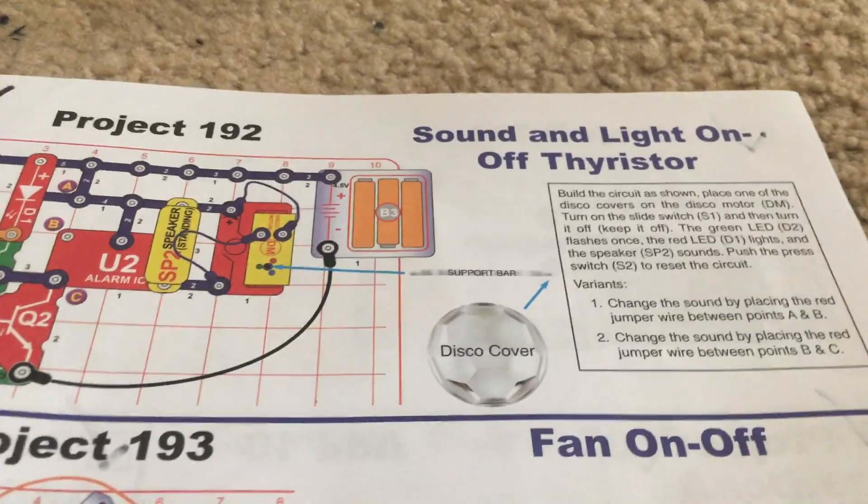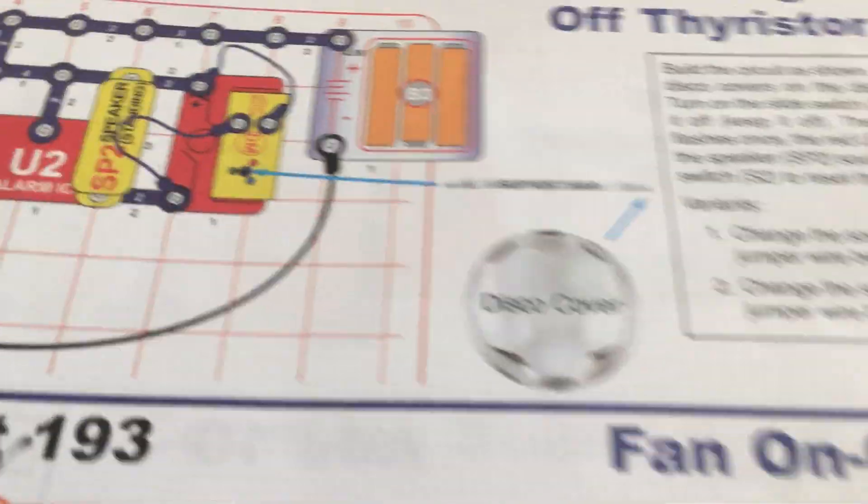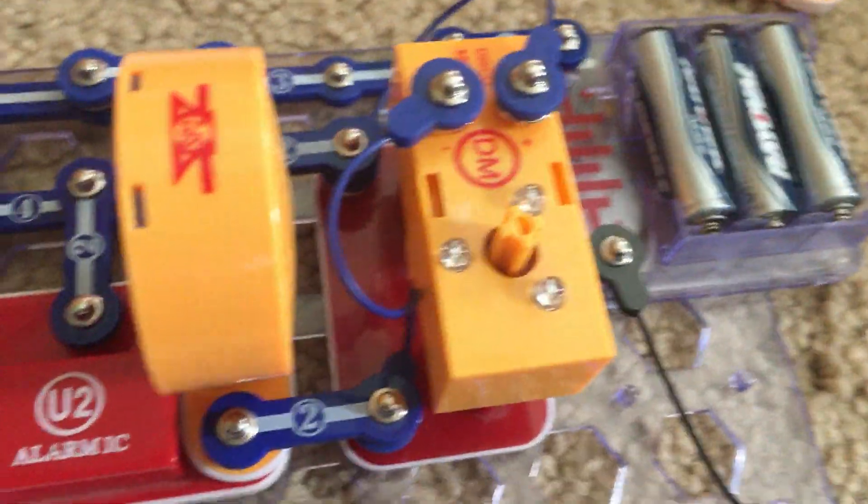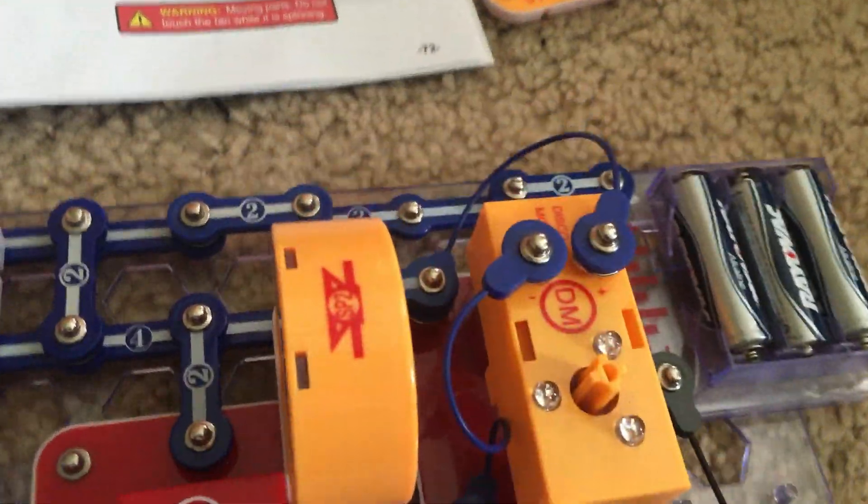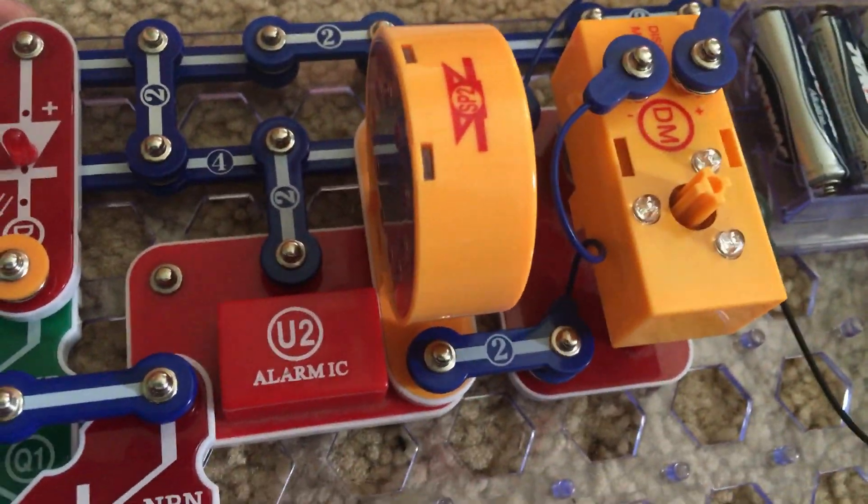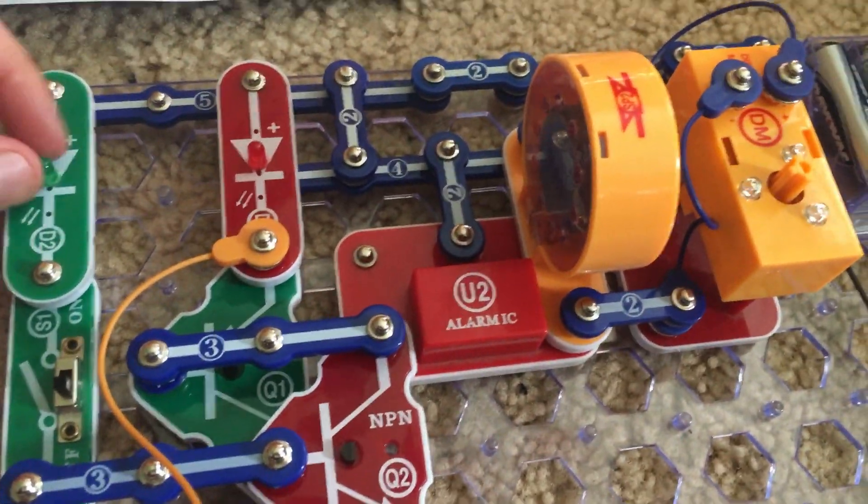Project 192 is sound and light on and off thrister. For this project we're using more components including the disco motor, alarm integrated circuit and speaker, and both the red and green LEDs.